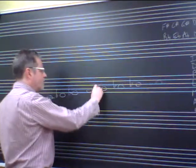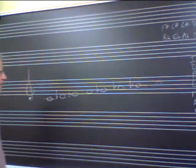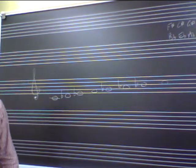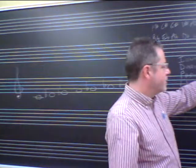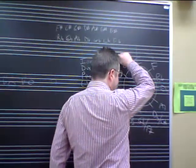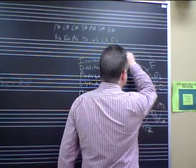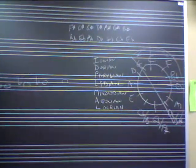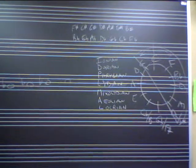If we add four flats—so again, B-flat, E-flat, A-flat, D-flat—if we add a D-flat to this, then we have C Phrygian. If we add one more flat to this and a G-flat to it, we have C Locrian. Pretty cool, huh?